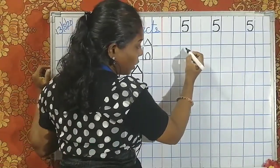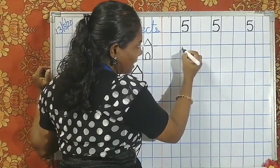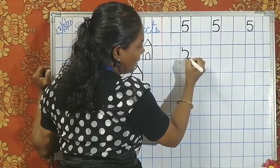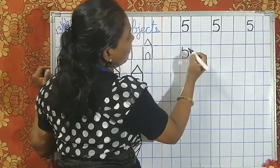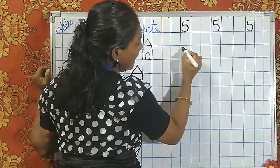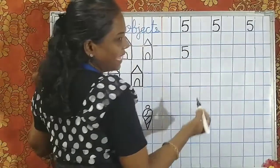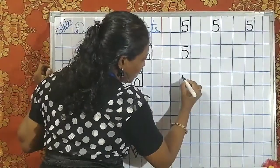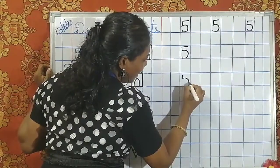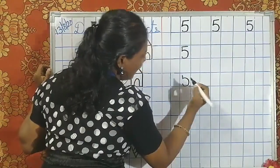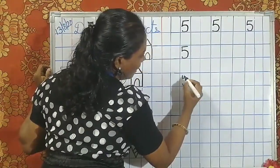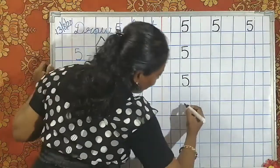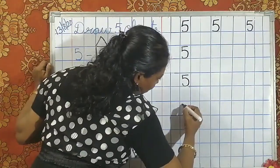How do we write? Teacher taught you, right? A small standing line, a curve, touch the base, lift the pencil, and a small sleeping line. Again: small standing line, then a curve, touch the base, lift the pencil, and a small sleeping line. Number 5.